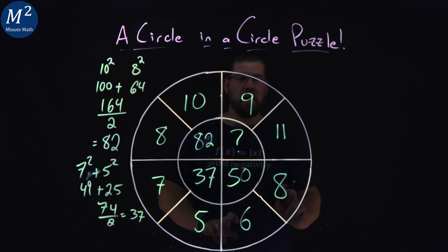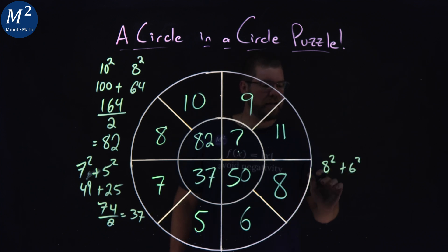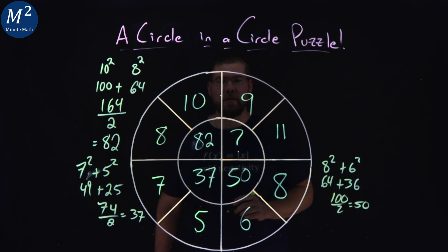See, if we're still holding true here, we have 8 squared plus 6 squared. 8 squared is 64 plus 6 squared, 36. From there, 64, 36 gives me 100. We divide that by 2 and make a good old 50.